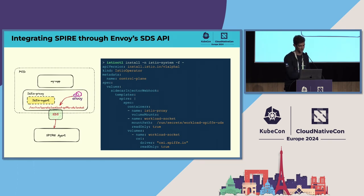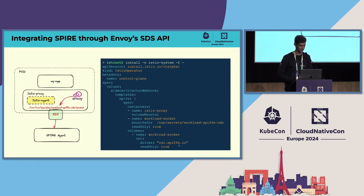When integrating SPIRE with Istio, instead of the Istio agent communicating with Envoy via SDS, we establish direct communication between the SPIRE agent and Envoy using SDS. During Istio installation, we set webhooks so that every Istio workload deployed gets the CSI driver socket from SPIRE mounted at a known location. The SPIRE agent and Envoy communicate via a socket on the same node through the Secret Discovery Service, provisioning certificates directly to Envoy.